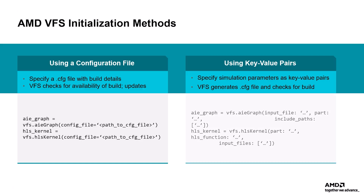You can specify simulation parameters as key value pairs. VFS will use these parameters to first generate the configuration file, and will then check for an existing build that matches. If no matching build exists, a new build will be triggered.